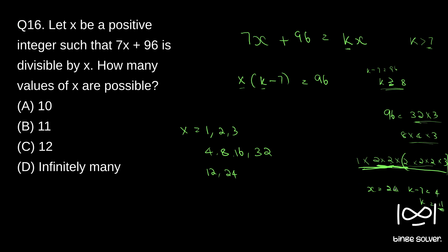We will be able to find k equal to 11 and satisfy this equation. So 24 is one valid case. Any combination we take, we will be able to find k and this equation will be satisfied. For 8 into 4, that gives 16 into 3 which is 48. Also 32 into 3 is 96. Any value above 96 means k minus 7 has to be a fraction, so x cannot exceed 96.